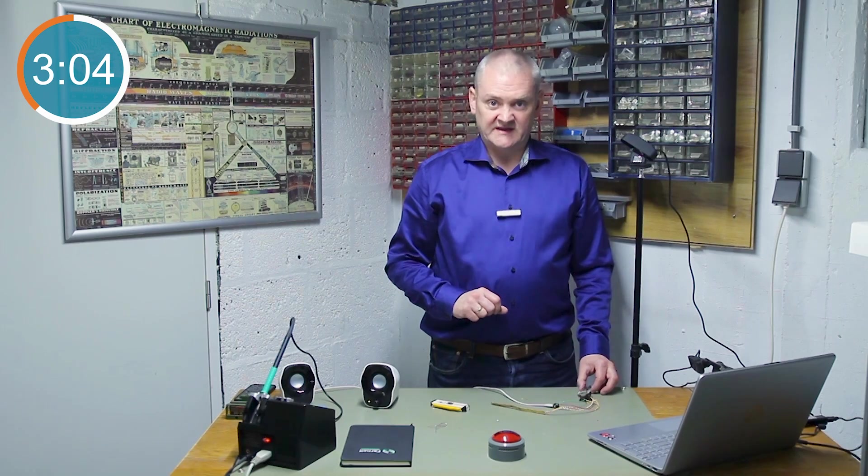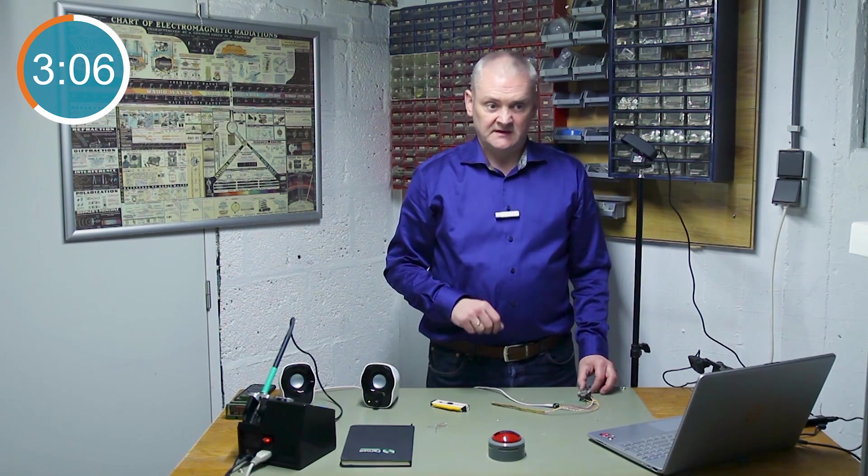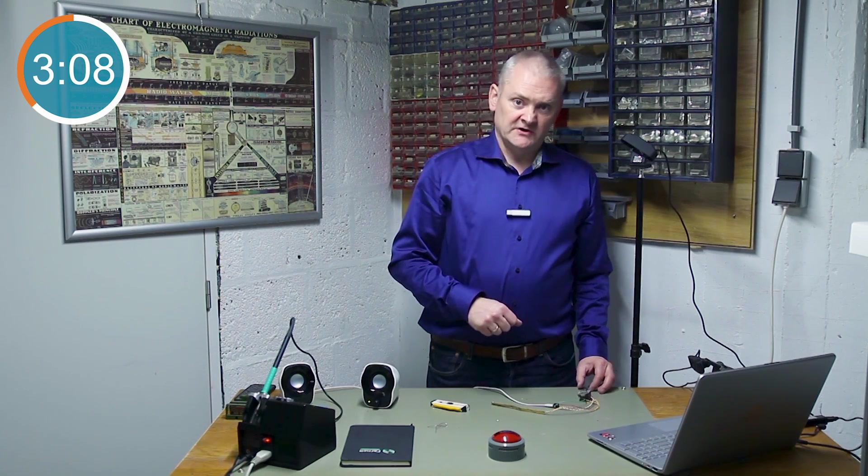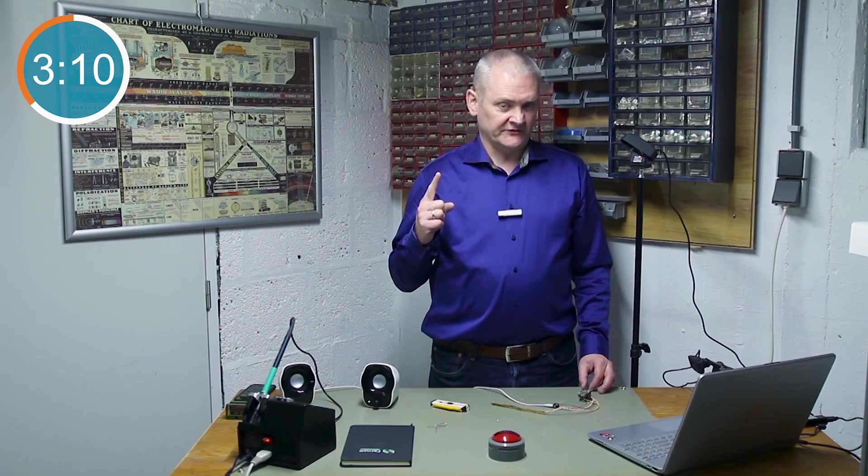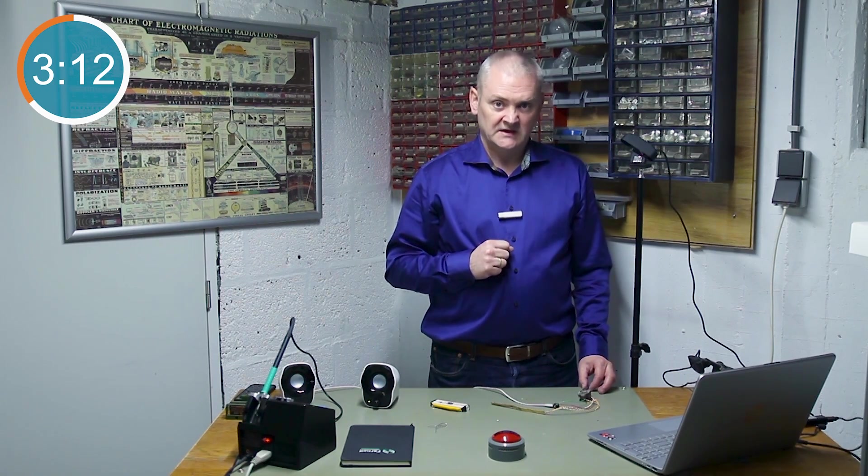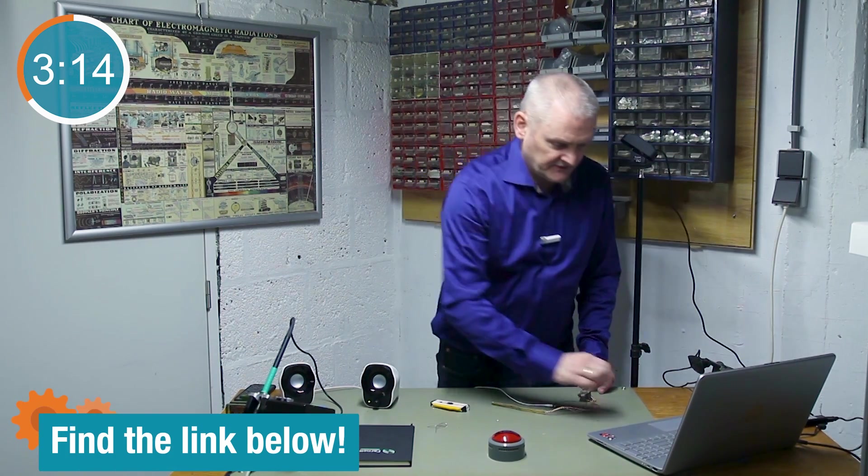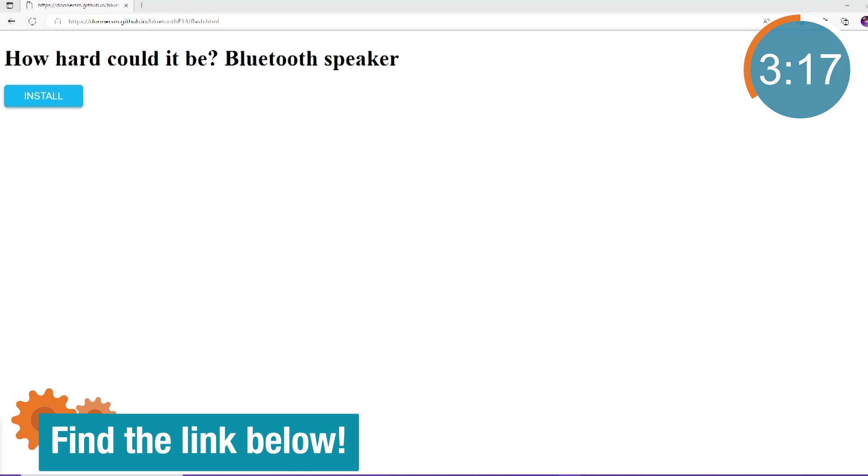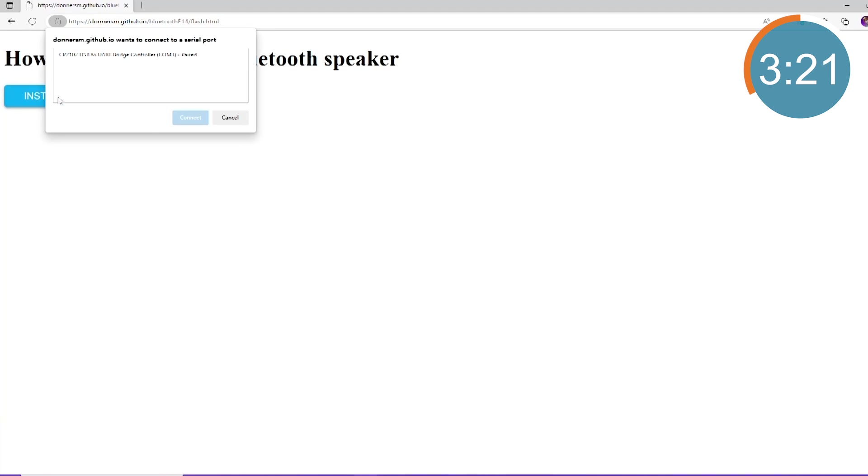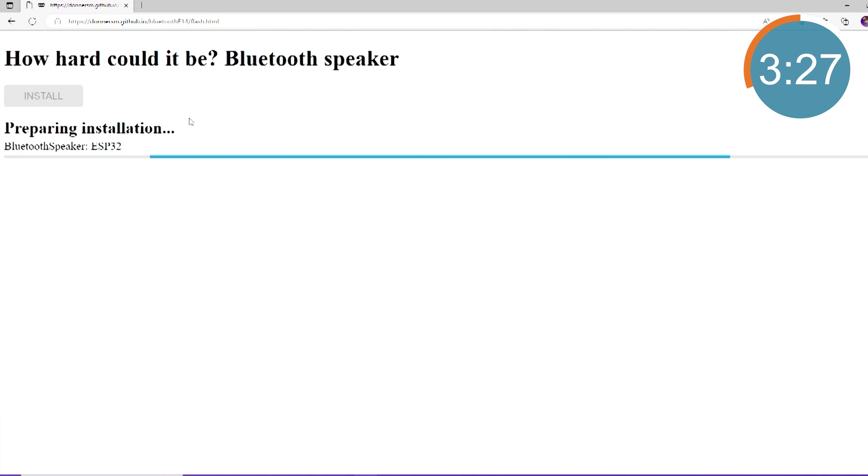And of course, you can download the sketch and modify it if you need, compile it and upload it. Or you can go through the fast way. And since we're under the clock, we're going to use the fast way through web browser programming. For that, you go to the following website, you press install, select the appropriate COM port, and say connect. And that is going to program.